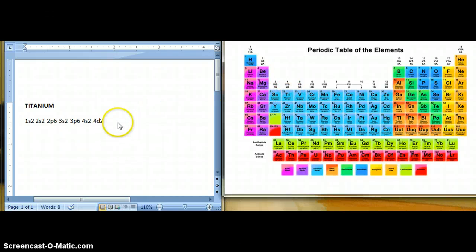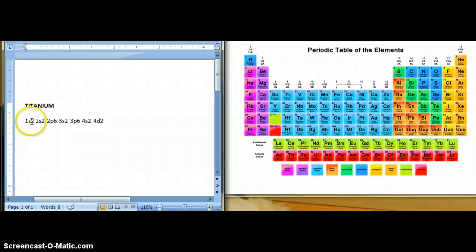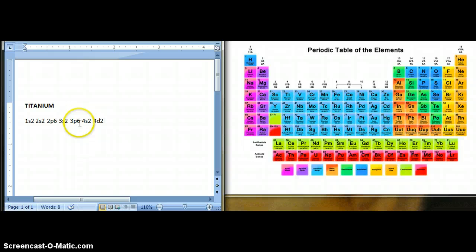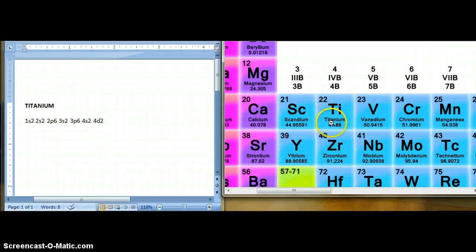So, if you count all the electrons up, let's see, 2 plus 2 is 4, plus 6 is 10, 10 plus 2 is 12, plus 6 is 18, plus 2 is 20, plus 2 again is 22. And there it is, titanium, atomic number 22.